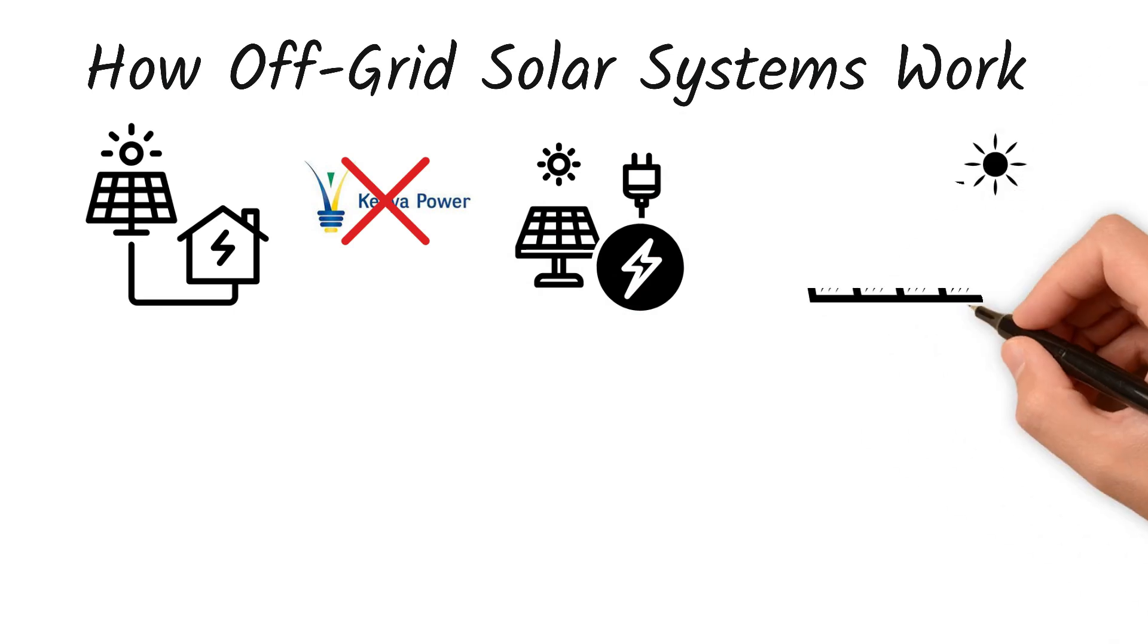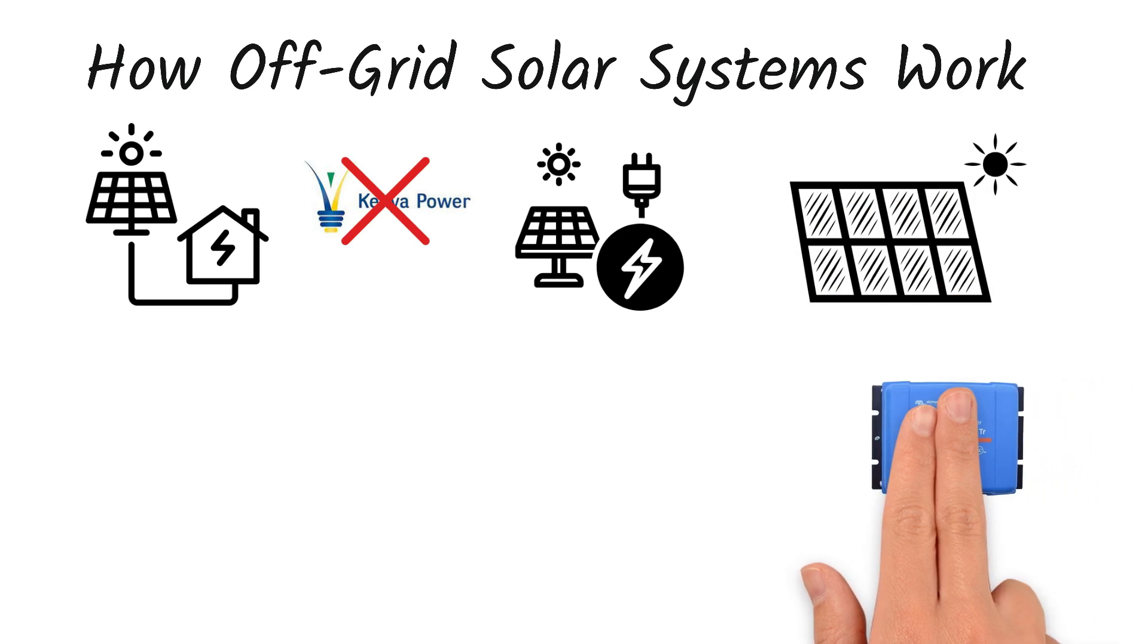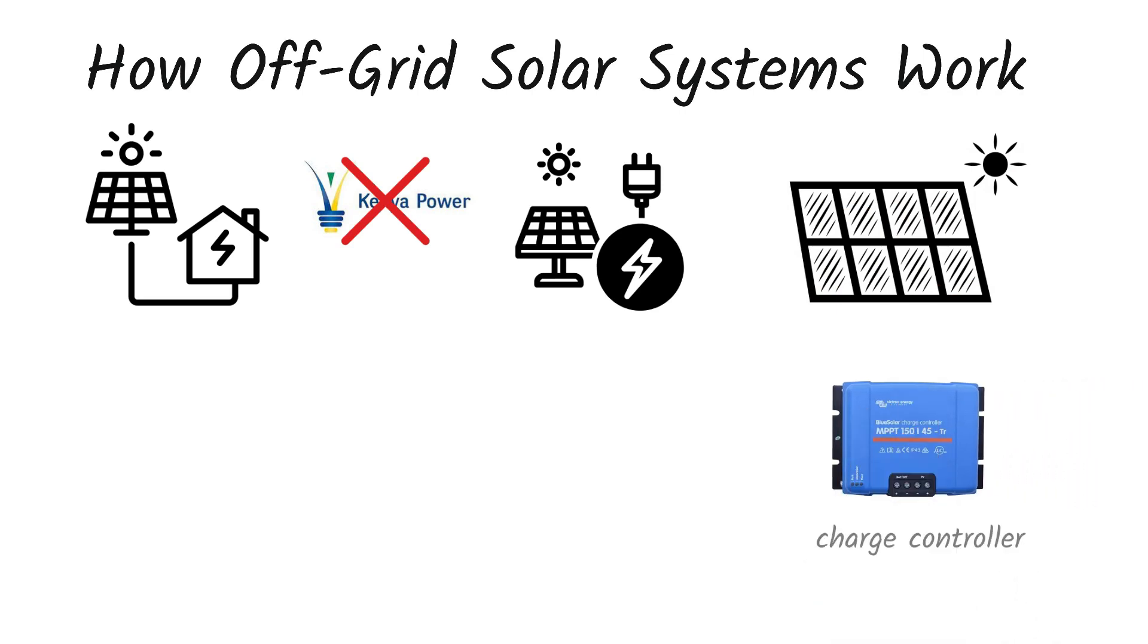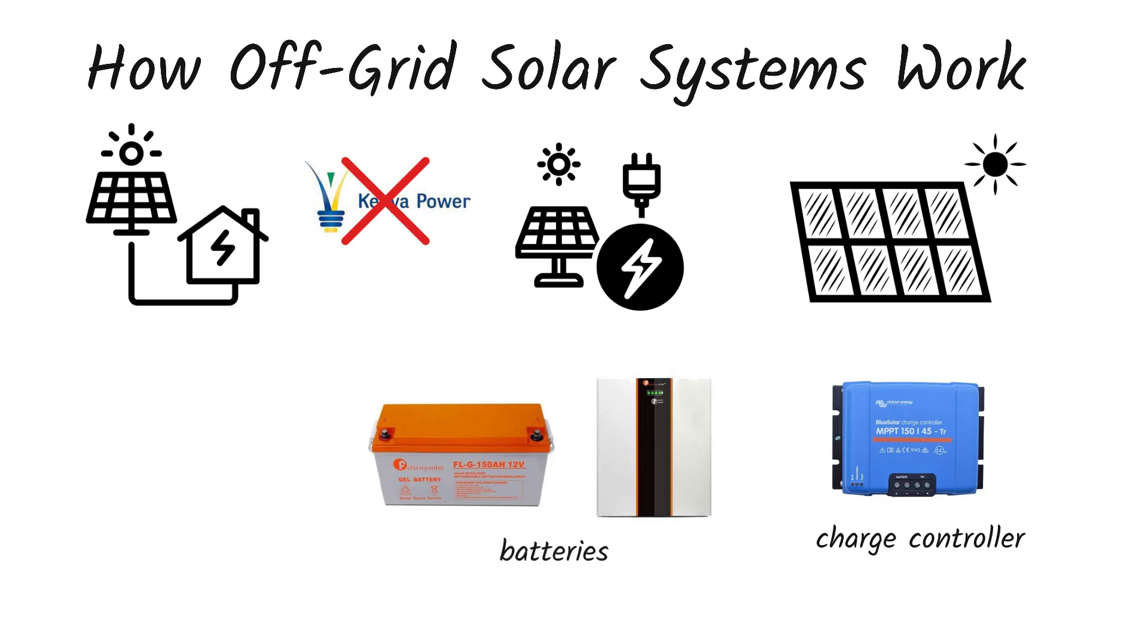First, the solar panels capture energy from the sun. Secondly, the energy flows into a charge controller which regulates the voltage. Thirdly, it's then stored in batteries for later use, especially at night. And fourthly,